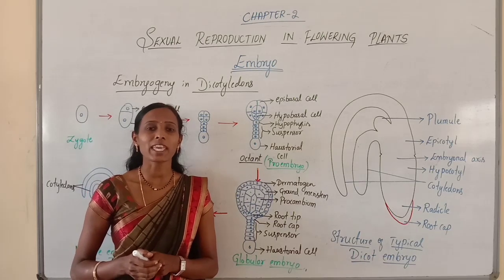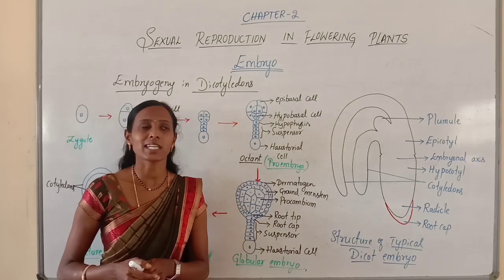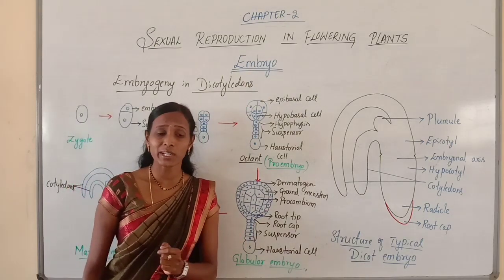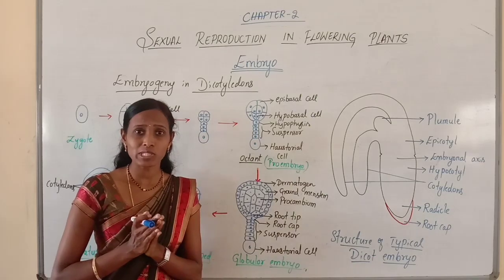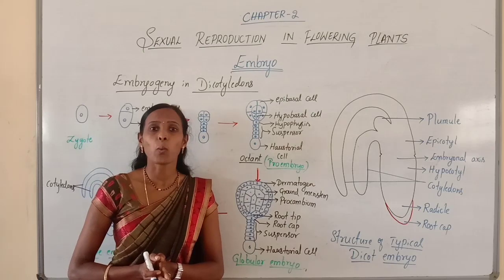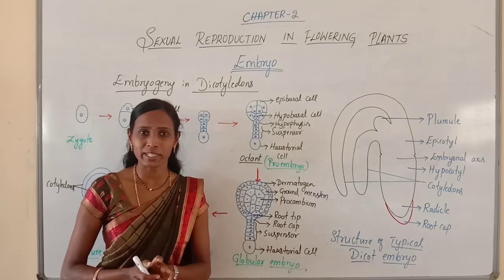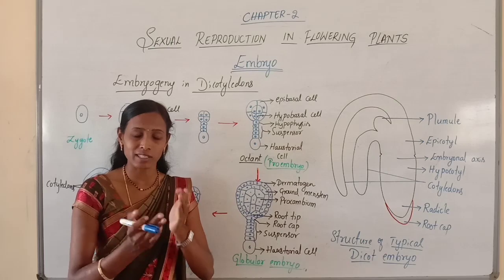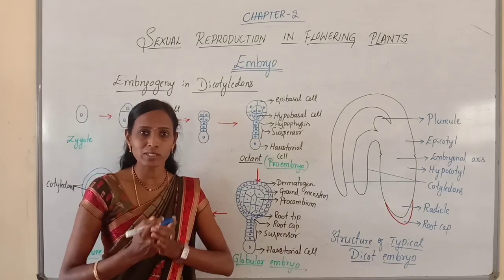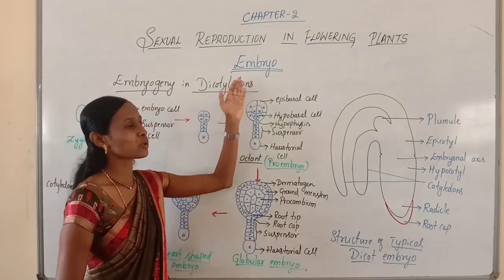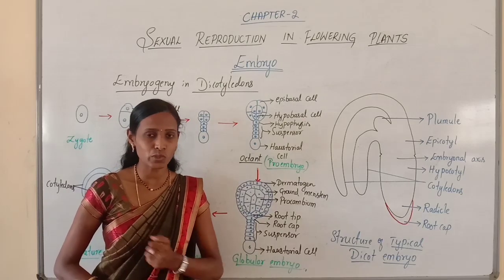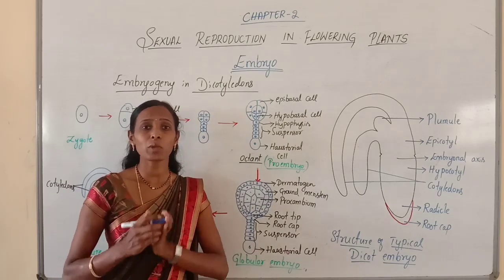Where is this embryo situated? This embryo is present towards the micropilar end, where the zygote is situated. Because the zygote only develops into embryo, and since the zygote is situated towards the micropilar end, the embryo is also situated towards the micropilar end.